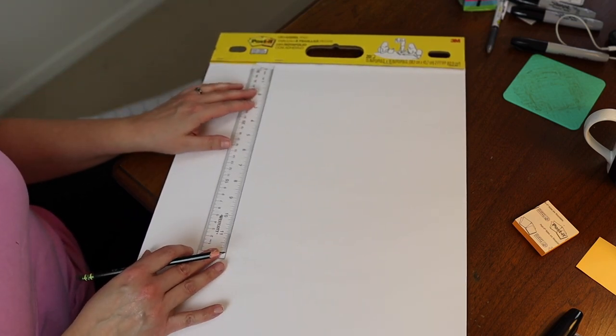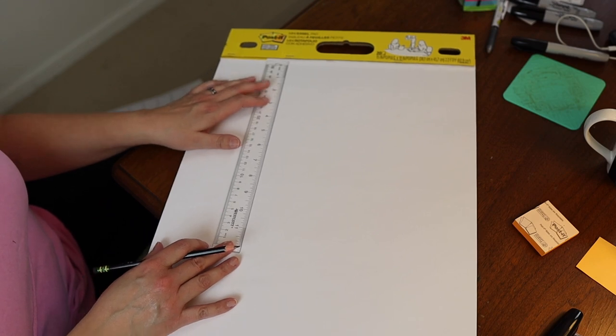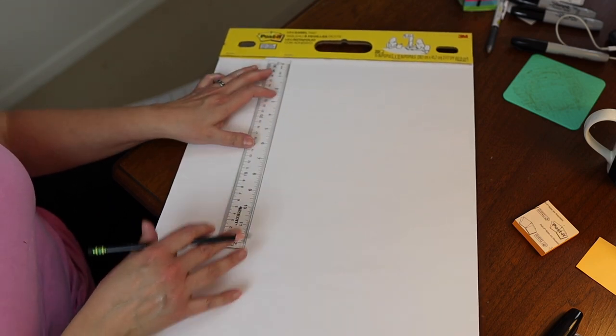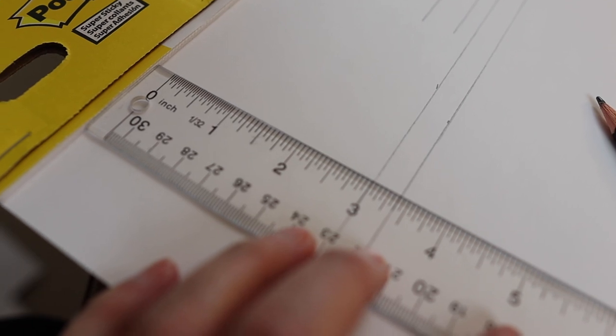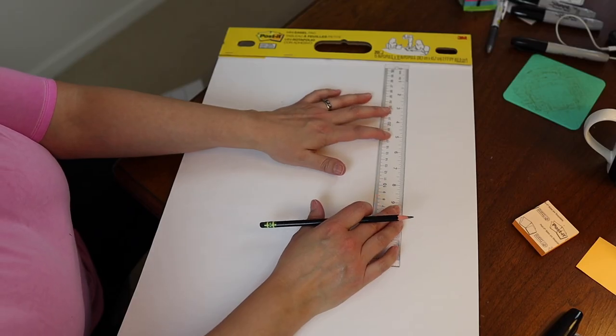And if you happen to have a yardstick, it might actually be easier than using a ruler. But we're going to start at the top, we're going to butt this ruler right up to the top here and mark three inches down.